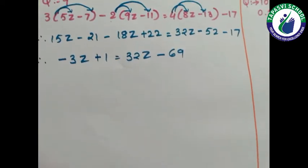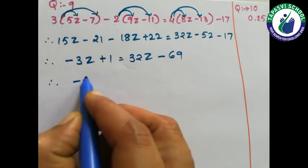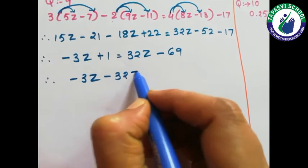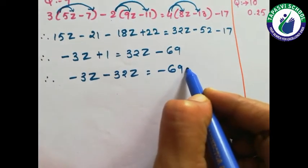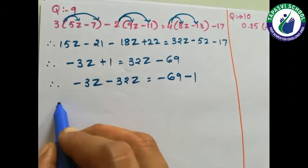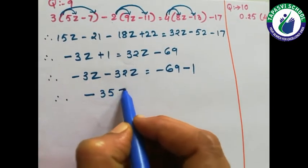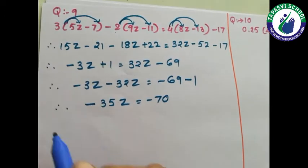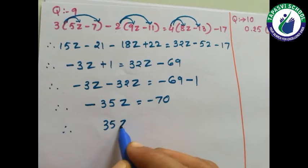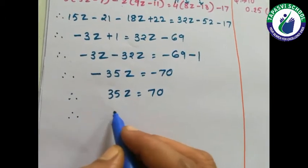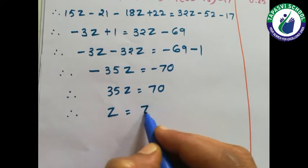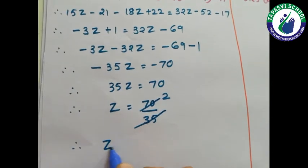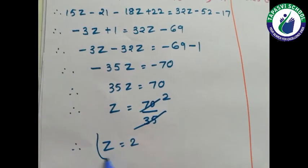Now one side variable term, one side constant term. Minus 3z plus 32z will come this side. It will become minus 32z minus 69 minus 1, so it will become minus 35z equals minus 70. Both sides have a negative sign, so minus minus becomes plus. So z equals 70 upon 35, and the variable z value will be 2.